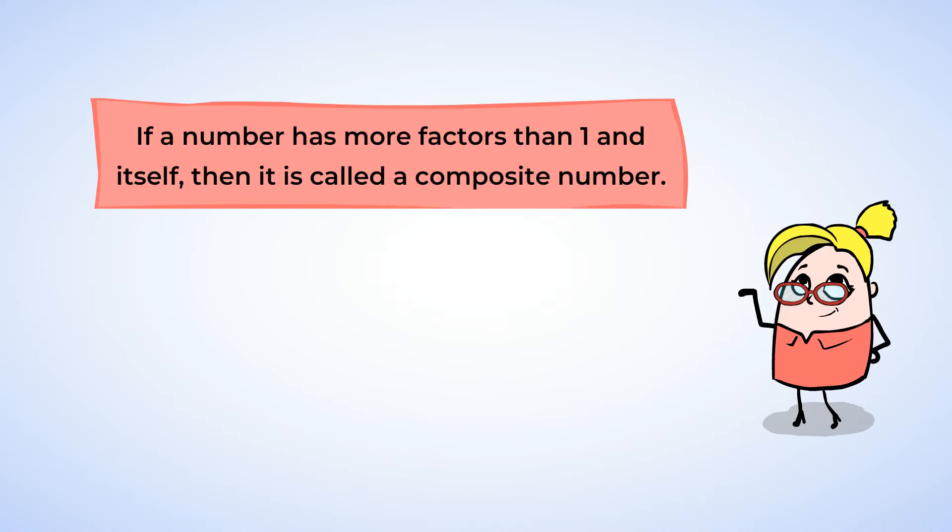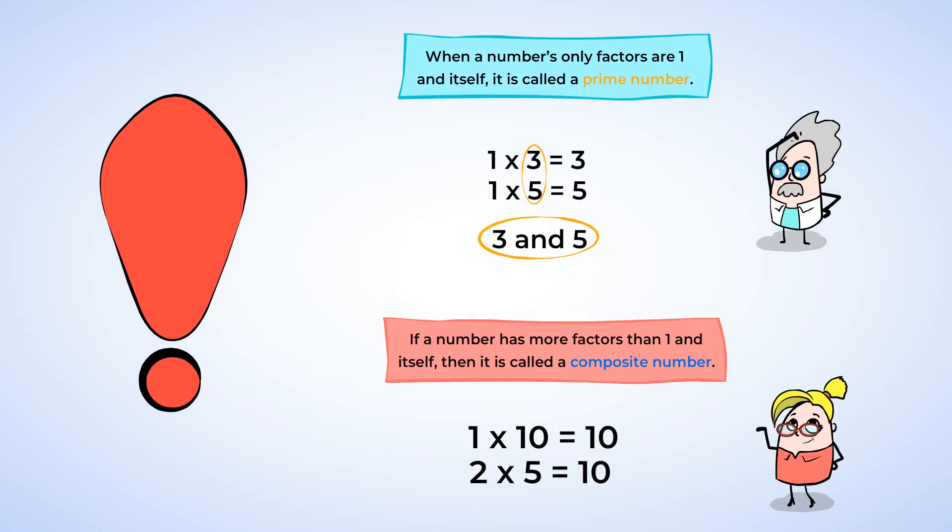And if a number has more factors than 1 and itself, then it's called a composite number. 10 is a composite number, because you can multiply 1 and 10 or 2 and 5 to get to a product of 10. So how can we find the factors of a number?